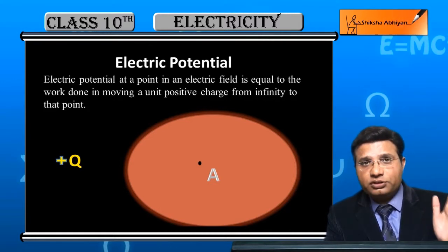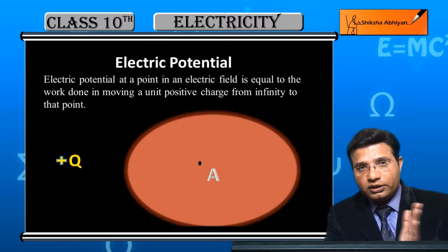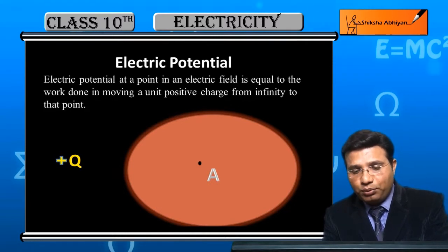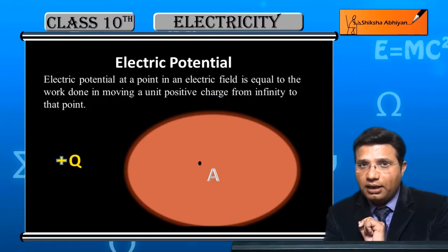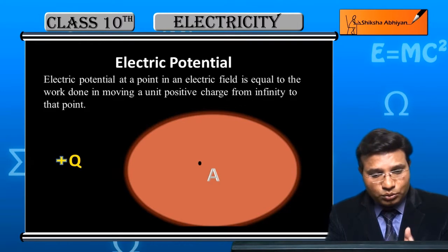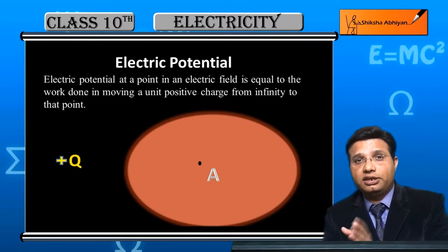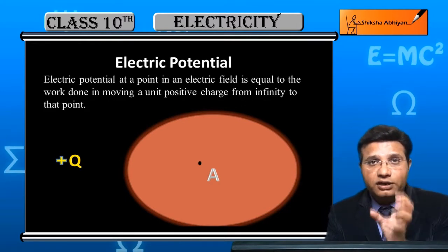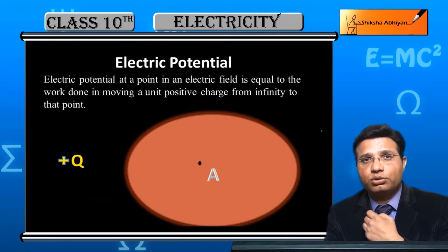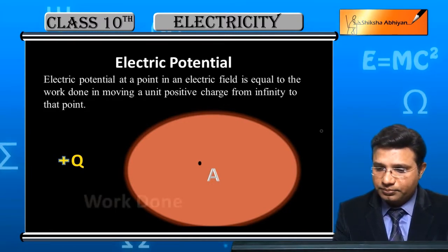That +q charge has to be moved from infinity to point A in the electric field. The work done in transporting it from one place to another — that work becomes the electric potential.